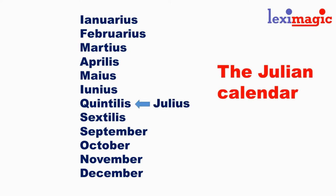Later on, his friend Mark Antony decided to name the month Quintilis after Julius Caesar, and it got the name July.